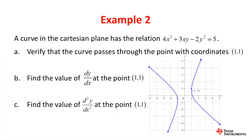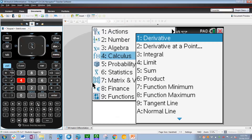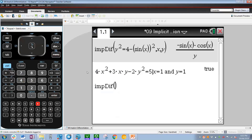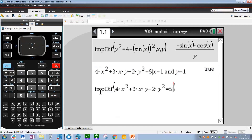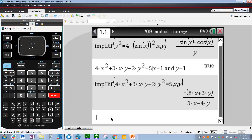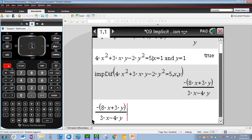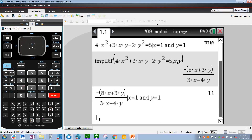Moving on to Part B: find the value of dy/dx at the point (1, 1). We're going to use implicit differentiation again — Menu 4 and E — and copy and paste the previous line, delete the unnecessary parts, then add comma x, comma y. Press Enter and this is the value of dy/dx. Now we sub in x equals 1, y equals 1 using the given command: ctrl equals, left for given, x equals 1, AND y equals 1. Press Enter. The value of dy/dx at the point (1, 1) is 11.